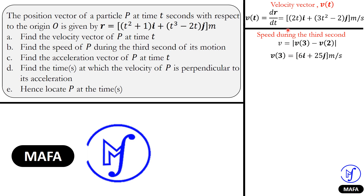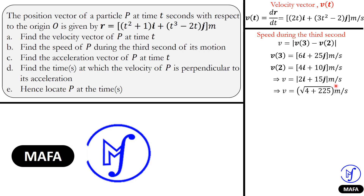Substituting t = 3 gives velocity 6i + 25j; substituting t = 2 gives 4i + 10j meters per second. The difference is 2i + 15j meters per second. Taking the magnitude: √(2² + 15²) = √(4 + 225) = √229 meters per second. This is the speed of the particle during the third second of its motion.